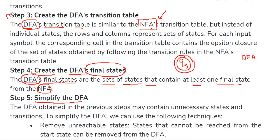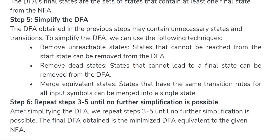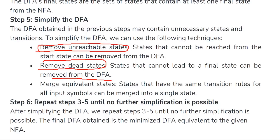You repeat steps 2 and 3, and finally you will get the simplified DFA. You repeat steps 3 and 4 until there are no new states generated, and finally you stop creating the transition table of DFA and draw the diagram from the transition table. That will be the minimized DFA for the equivalent NFA. We have to repeat the process and remove any unreachable states, remove any dead states, and merge the equivalent states. Finally, you will get a minimized DFA for the given equivalent NFA.